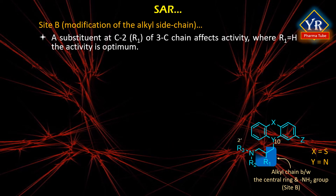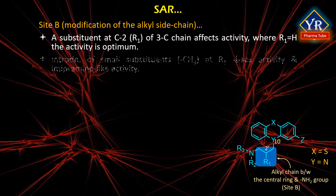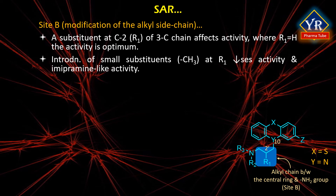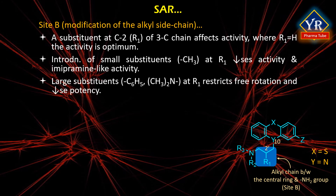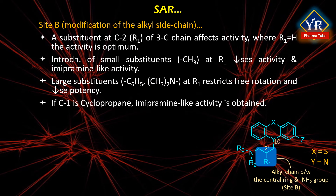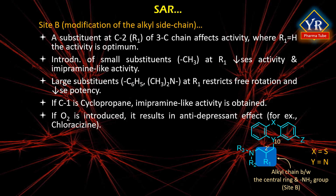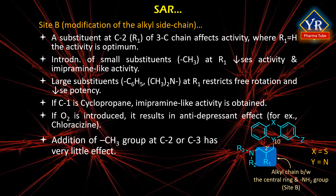A substituent at position R1 of the three carbon atom chain affects activity. Where R1 is a hydrogen atom, the activity is optimal. Introduction of small alkyl substituents such as a methyl group at R1 decreases antipsychotic and imipramine-like activity. Large substituents such as phenyl and dimethylamino groups that restrict free rotation also decrease neuroleptic potency. If C1 is incorporated into a cyclopropane ring, imipramine-like activity is obtained. When oxygen is introduced at C2, a potent antidepressant effect results, e.g., chloracizine. Addition of a methyl group at C2 or C3 has very little effect on activity.